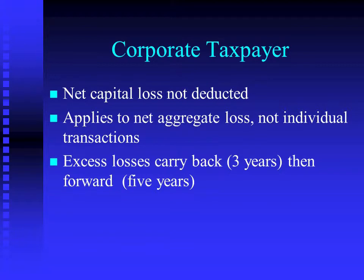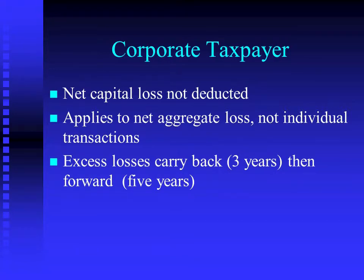Excess losses do have a carryback and then a carryforward. When you have a carryback, you go to the oldest year first. So if the loss came from 2013, you go back to 2010 and try to use it, then 2011, then 2012. If you couldn't use it, then you would go to 2014 and have an opportunity for five more years. If you had no net capital gains in that period, you would simply lose the loss completely. When you go carry back, you always go to the oldest year first — and that's all taxpayers.